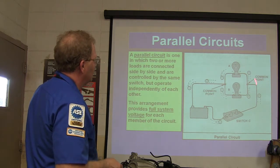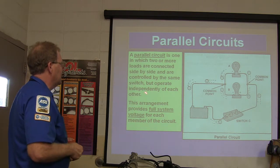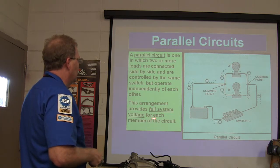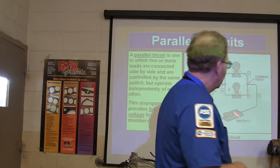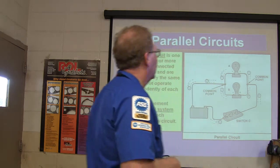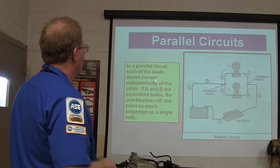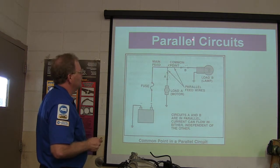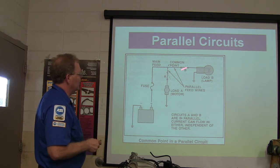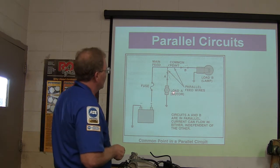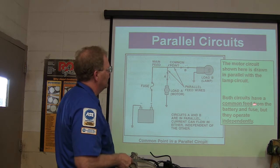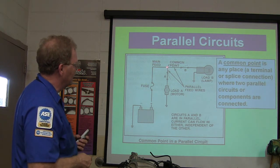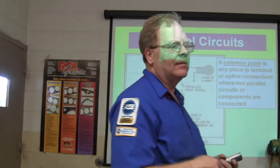In a parallel circuit, you've got a common point on each end. Whenever two or more loads are connected side by side and controlled by the same switch, they operate independently of each other — if one burns out, the other still works. Full system voltage is available to each member of the circuit. In a series circuit voltage gets divided, but in parallel the current is divided while the voltage is not. A splat connection is where two lines come together with a dot connecting them — that's what a splice looks like on a schematic.